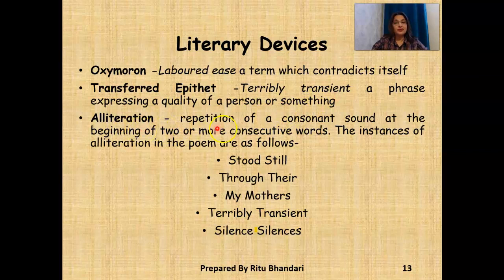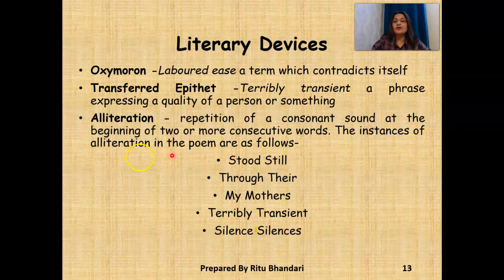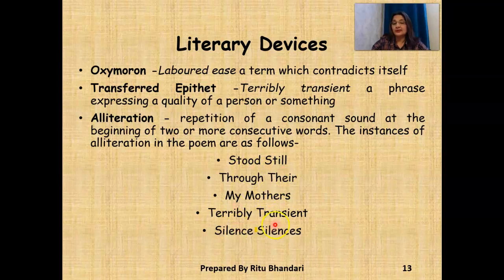Alliteration — repetition of a consonant sound at the beginning of two or more consecutive words. The instances of alliteration in the poem are as follows: 'stood still,' 'through there,' 'my mother's,' 'terribly transient,' and 'silence silences.'